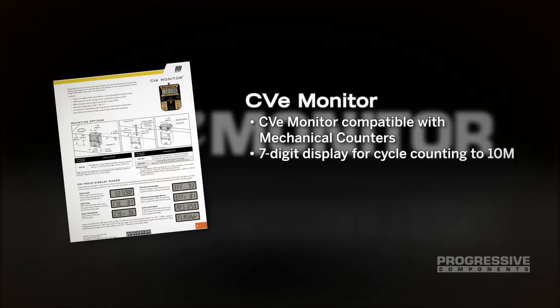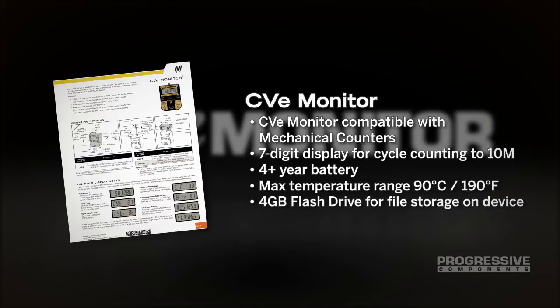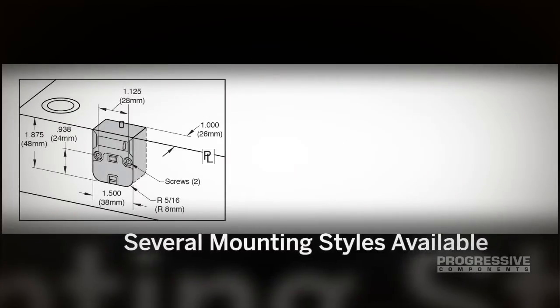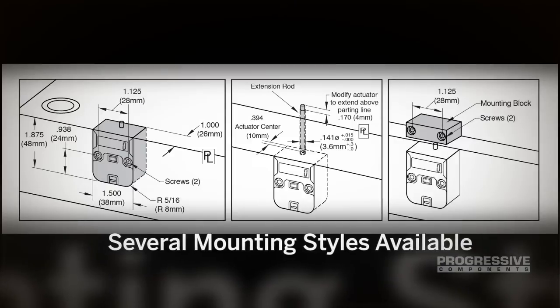The CVE monitor is compatible with CV mechanical counters. It has a 7-digit display for cycle counting up to 10 million cycles, comes with a 4-year battery life, and features a maximum temperature range of 90 degrees Celsius or 190 degrees Fahrenheit. The device includes a 4-gigabyte internal flash drive for a file storage directory right on the device, and the CVE monitor is now available with several different mounting options.